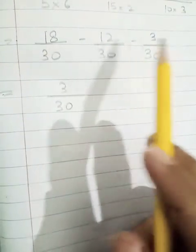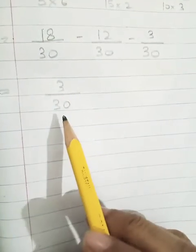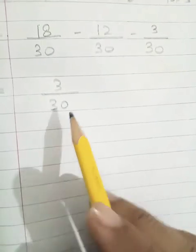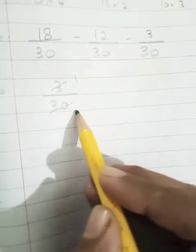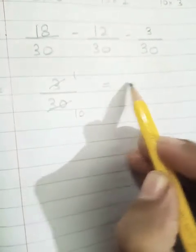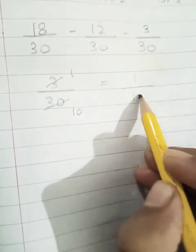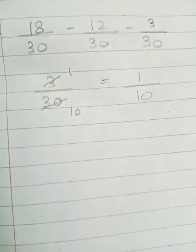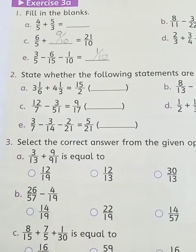18 minus 12 minus 3 equals 3. So it's 3 upon 30. Now we can reduce this. Very easily. 3 times 1 is 3 and 3 times 10 is 30. So our answer is 1 upon 10.